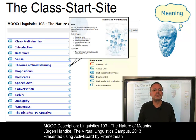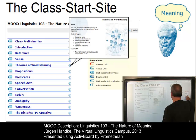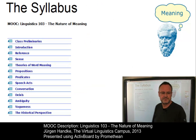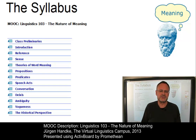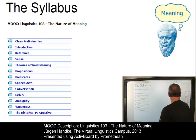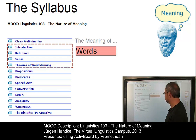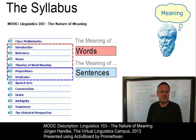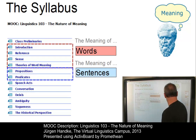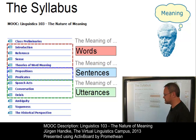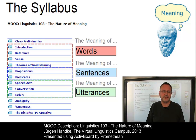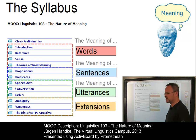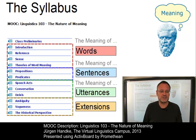Let us now look at the content of the class, traditionally referred to as the syllabus. The class is subdivided into three central parts: the discussion of word meaning, the central approaches towards the meaning of sentences, and the discussion of the meaning of larger structures, such as utterances. The remaining units discuss additional phenomena, including historical aspects.